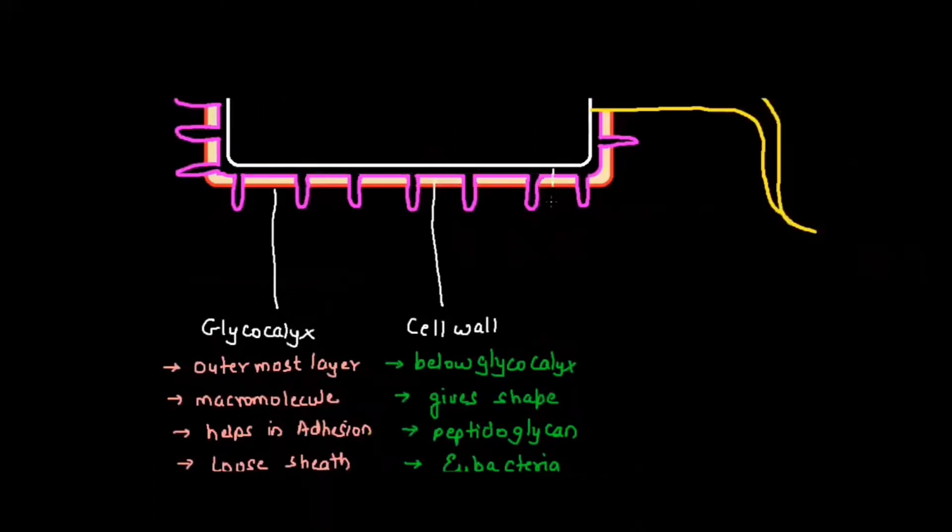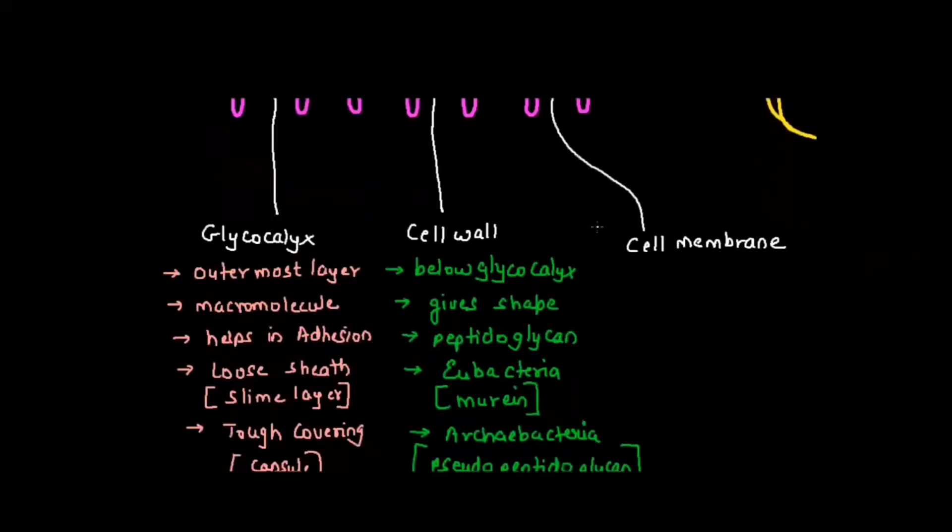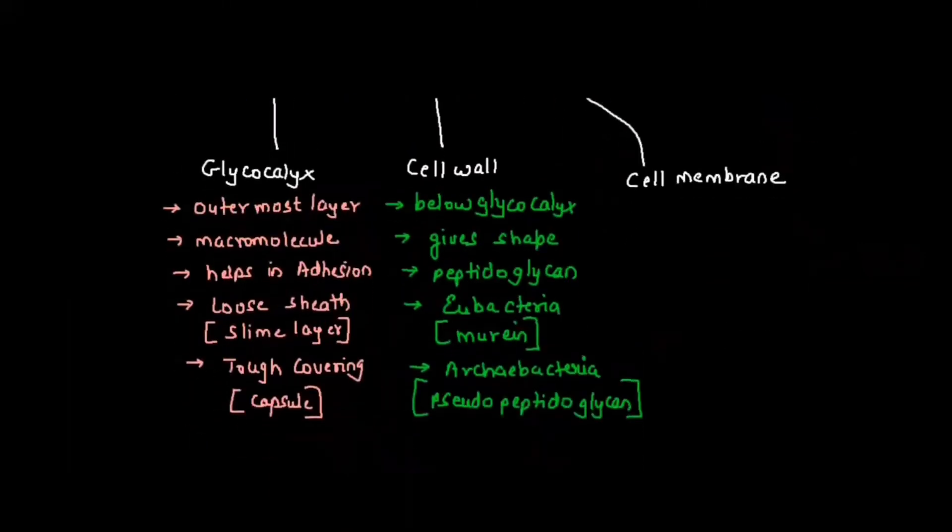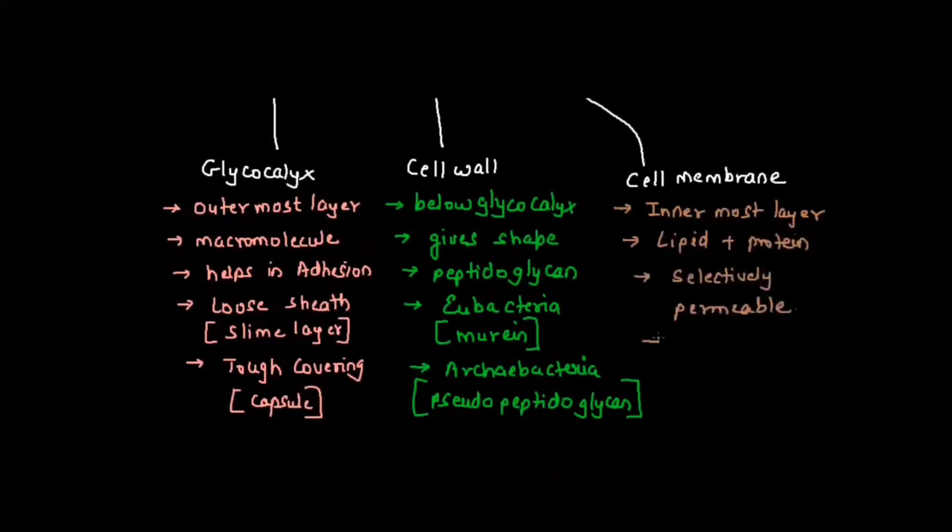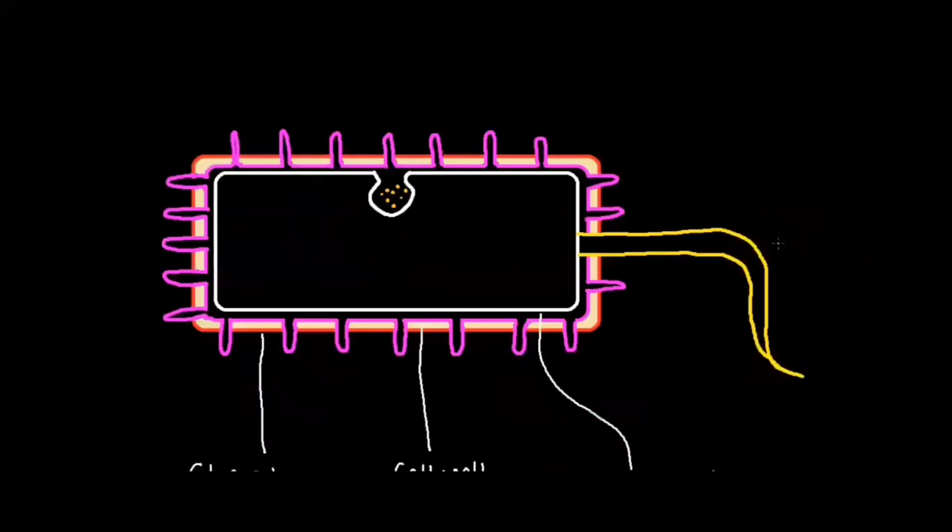Inner to the cell wall, we get the cell membrane. Cell membrane is made up of lipid and protein. It is the innermost layer connected to the cytoplasm. It is selectively permeable, meaning it allows only selected substances to pass through. Some part of the cell membrane will extend into the cytoplasm and form a structure called mesosome.